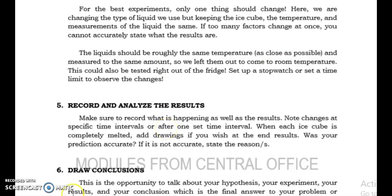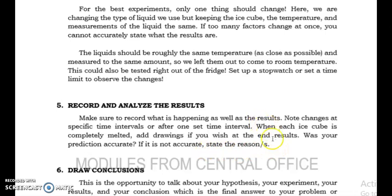The fifth step is to record and analyze the results. While doing your experiment, make sure to record what is happening, as well as the results — note changes at specific time intervals or after one set time interval when each ice cube is completely melted. Add drawings if you wish. At the end, ask: was your prediction accurate? If it is not accurate, state your reasons. Make at least three trials in your experiment.